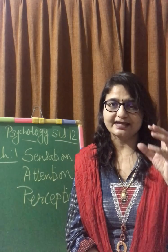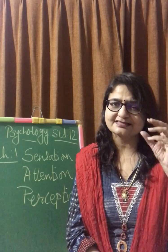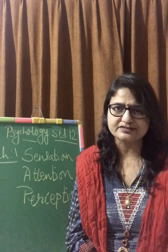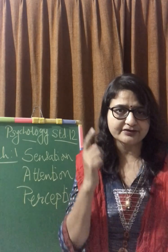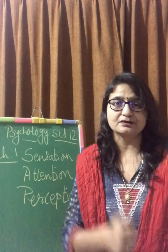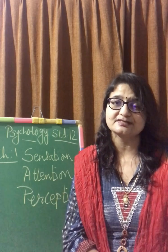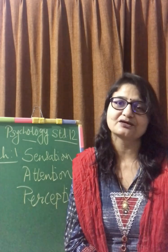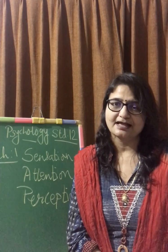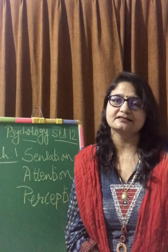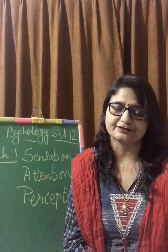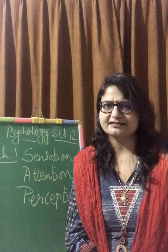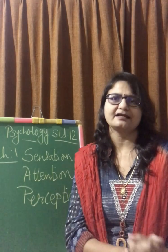These are called the external receptors. Second is the body receptor — inside our body there are organs where we can get the feeling, where the sensation takes place. For example, the hair in the nose and ears, and the rods and cones in the eyes which are responsible for visual sensation. These are called the body receptors.